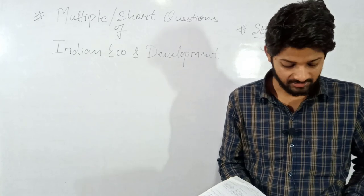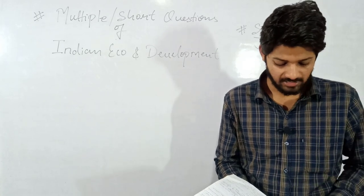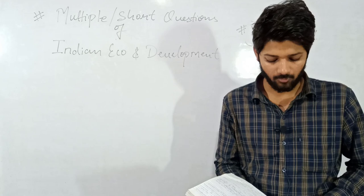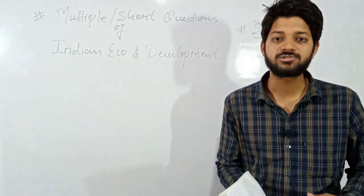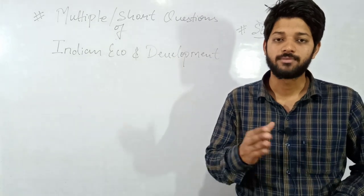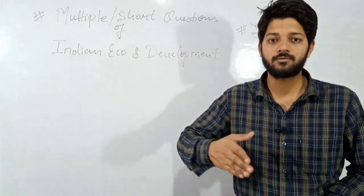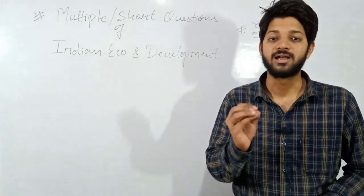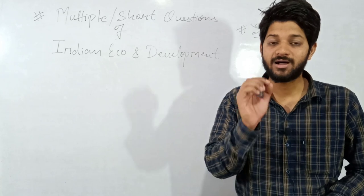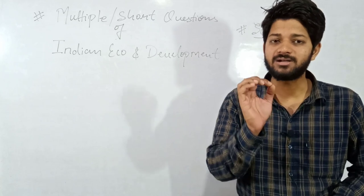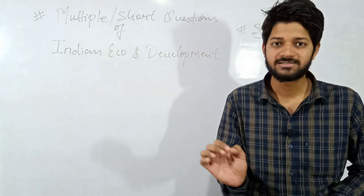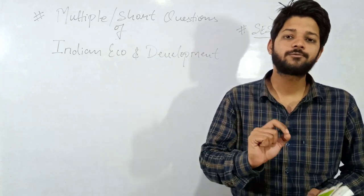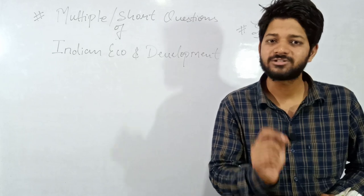The seventh question: in which year was the National Food for Work Program launched? The answer will be 1970. Several options will be given — you have to tick out 1970.